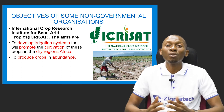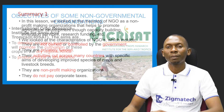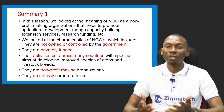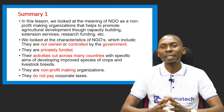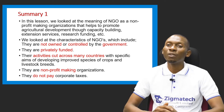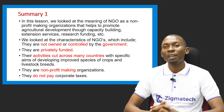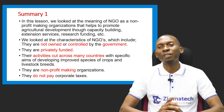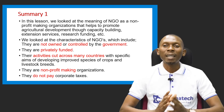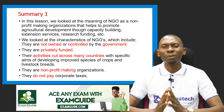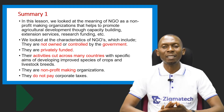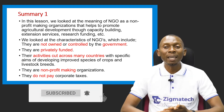We've taken note of the meaning of NGOs and some of their objectives. In this lesson, we looked at the meaning of NGOs — a non-profit-making organization that helps to promote agricultural development through capacity building, extension services, and research funding. We also looked at the characteristics of NGOs: they are not owned or controlled by the government, they are privately funded, their activities cut across many countries with the aim of improving species of crops and livestock breeds. They are also non-profit-making and do not pay corporate taxes.